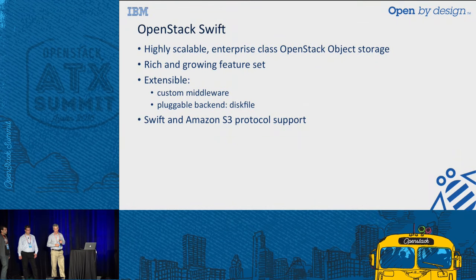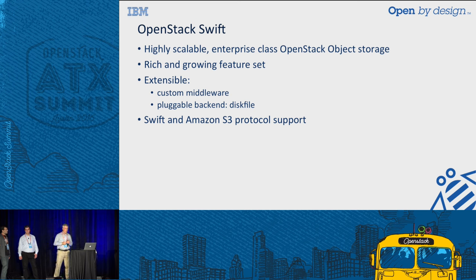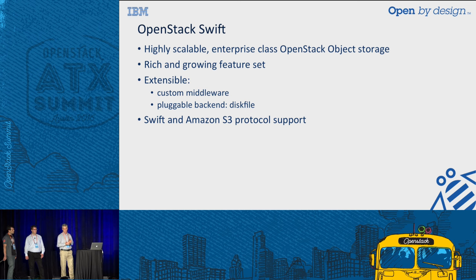OpenStack Swift is highly scalable, enterprise-class object storage with a rich and growing set of features. One important aspect is that it's extensible — there are two primary extension points: custom middleware, and pluggable backends where you can replace an existing Swift module with your own version at these plug-in points. Finally, Swift supports both the Swift API as well as the S3 API, and for a lot of clients today that's really important because their existing software is based on S3.